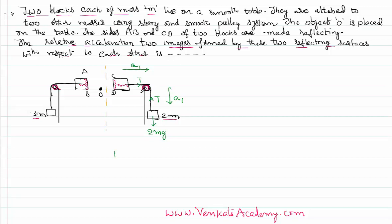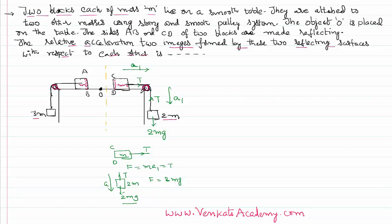For the CD mass block, tension is the only force acting, so m·a1 = T. For the 2m mass, 2mg acts downward and tension acts upward; it moves down with acceleration a1. So the resultant force equation gives: 2m·a1 = 2mg − T. Since T = m·a1, substituting gives 2m·a1 = 2mg − m·a1.